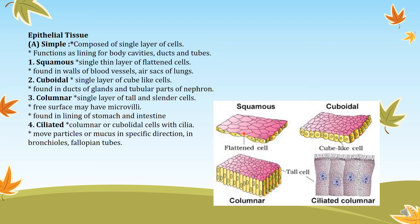In the nephrons there are different functions — absorption of materials as well as secretion. For easy absorption and secretion, the walls of the nephrons are made up of simple cuboidal epithelial cells. Columnar epithelial tissue consists of a single layer of tall and slender cells; the free surface may have microvilli — hair-like structures. Found in the lining of the stomach and intestine, these villi help increase the surface area for absorption of nutrients in the small intestine.